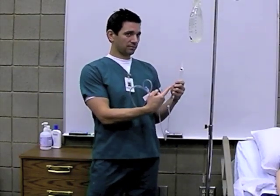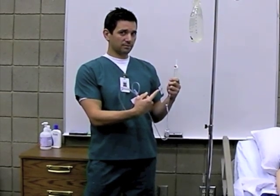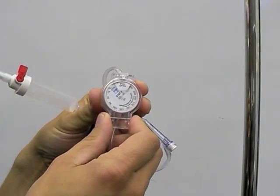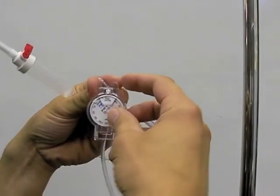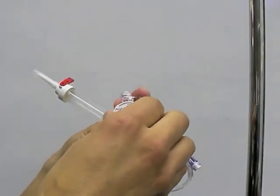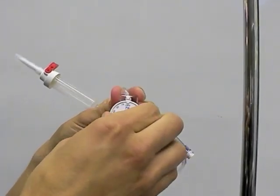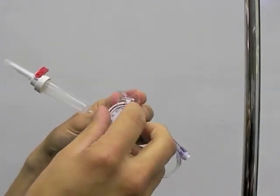The spike and the drip chamber are located on the end of the administration set, which will be inserted into the IV bag. Before we spike our bag of saline, we need to occlude our line by setting our drip rate to off. This prevents us from making a mess when we spike our solution. With an open line, we could have saline leaking all over the floor.